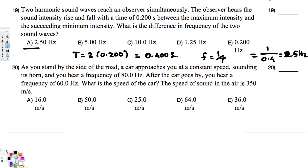Now let's look at the second question. As you stand by the side of the road, a car approaches you at a constant speed sounding its horn, and you hear a frequency of 80 hertz. After the car goes by, you hear a frequency of 60 hertz. What is the speed of the car? The speed of sound in the air is 350 meters per second. This is a Doppler effect question.